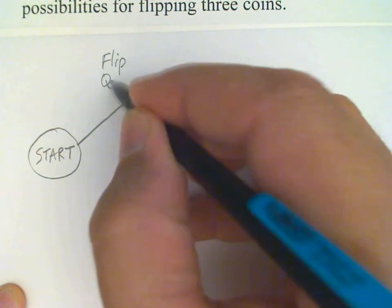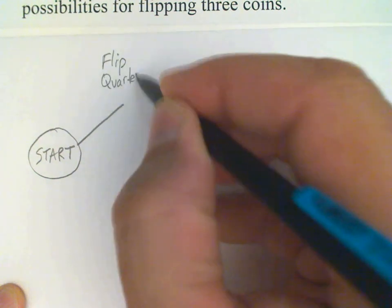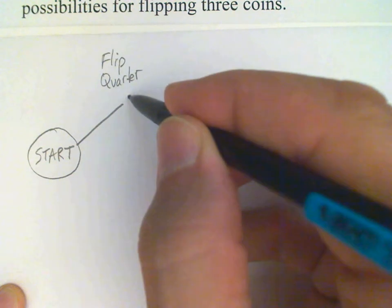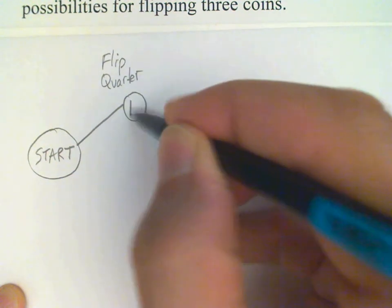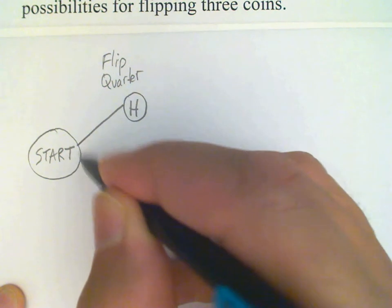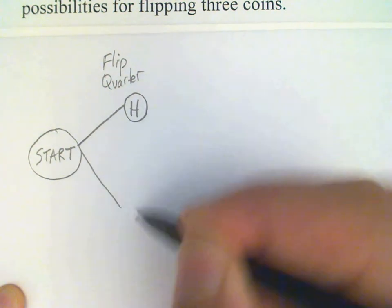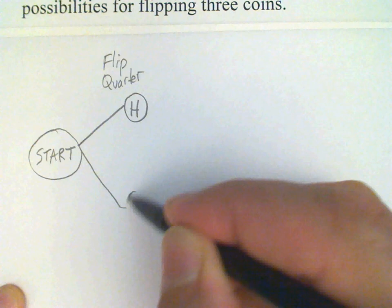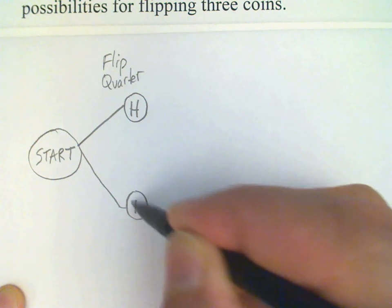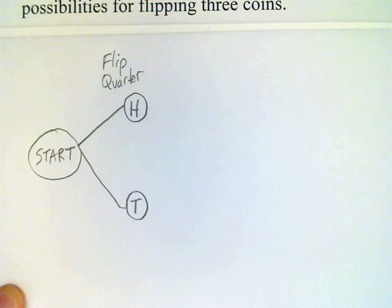And it doesn't really matter what the coins are. They could all be the same or they could be different. And there's of course two possibilities when we flip a coin. It could be head or it could be tail. So we give each of the two possibilities.